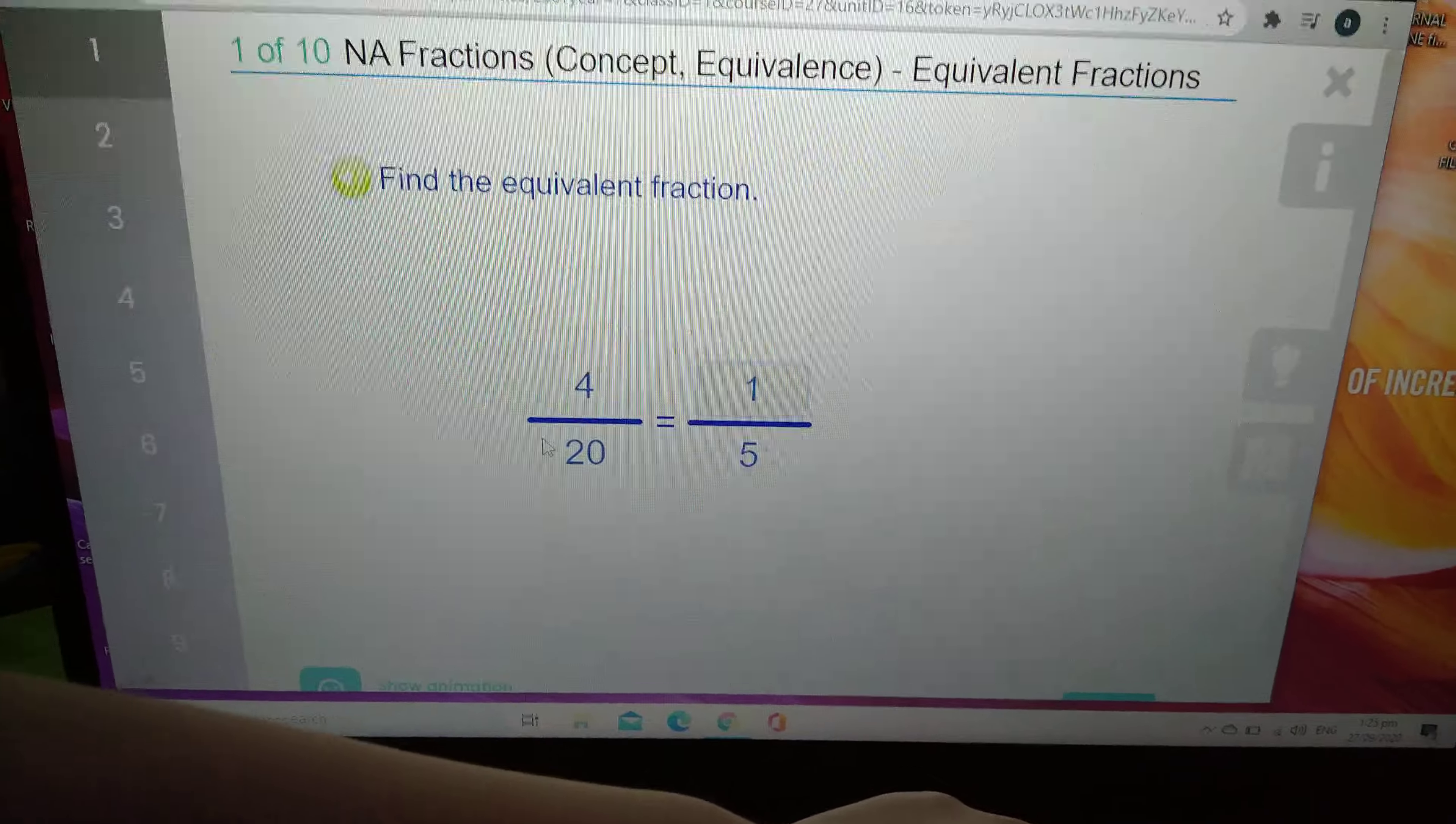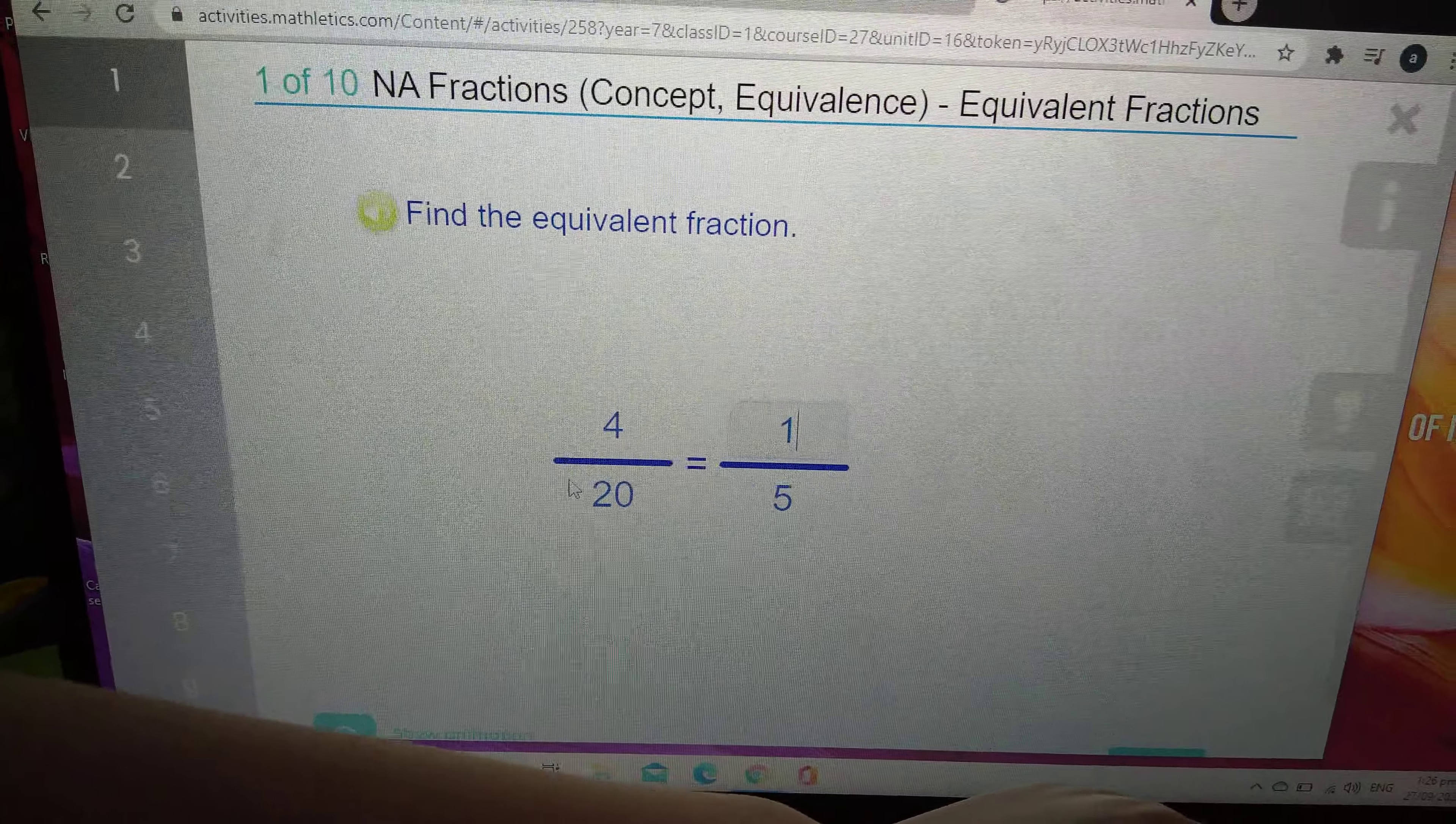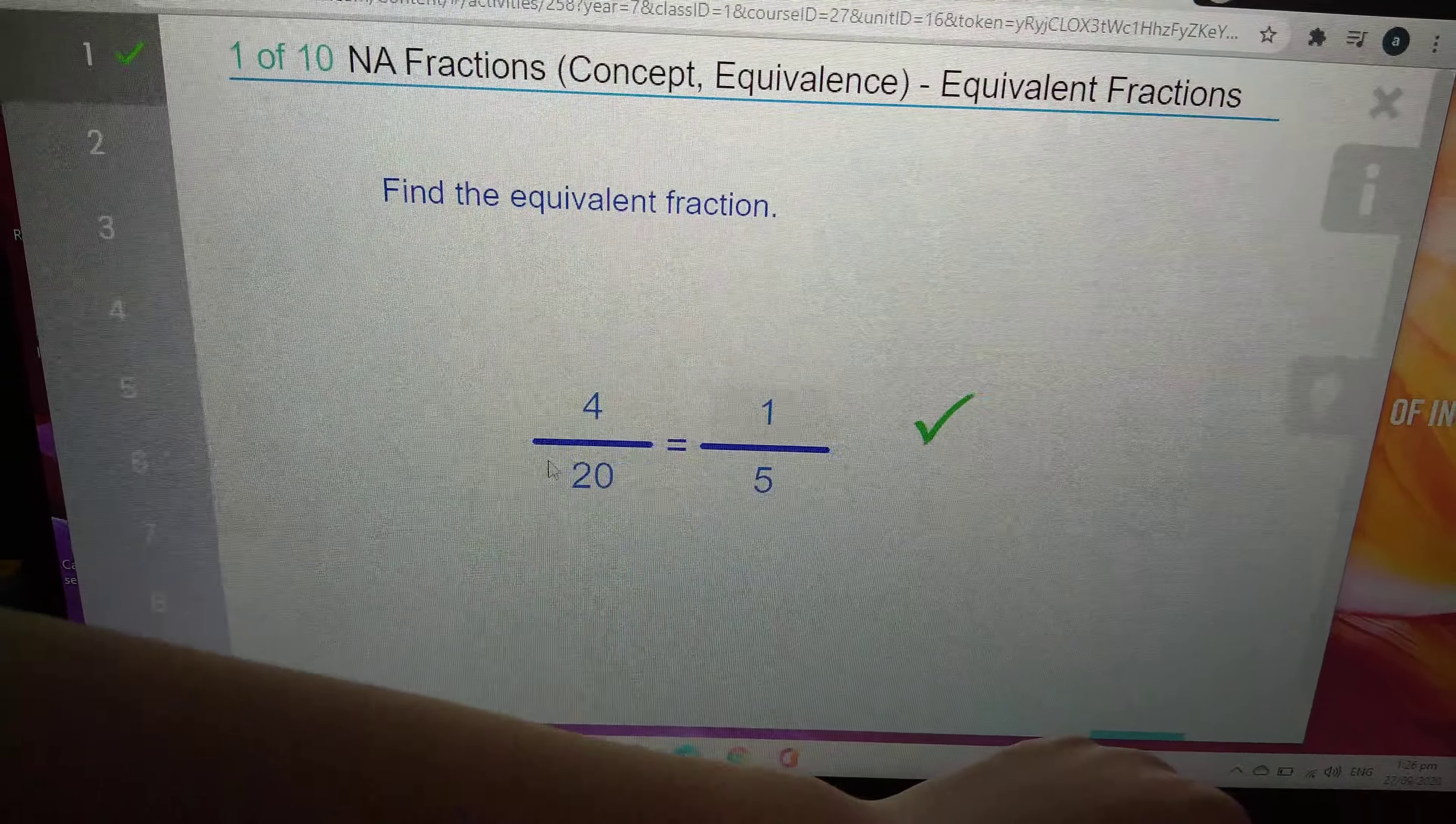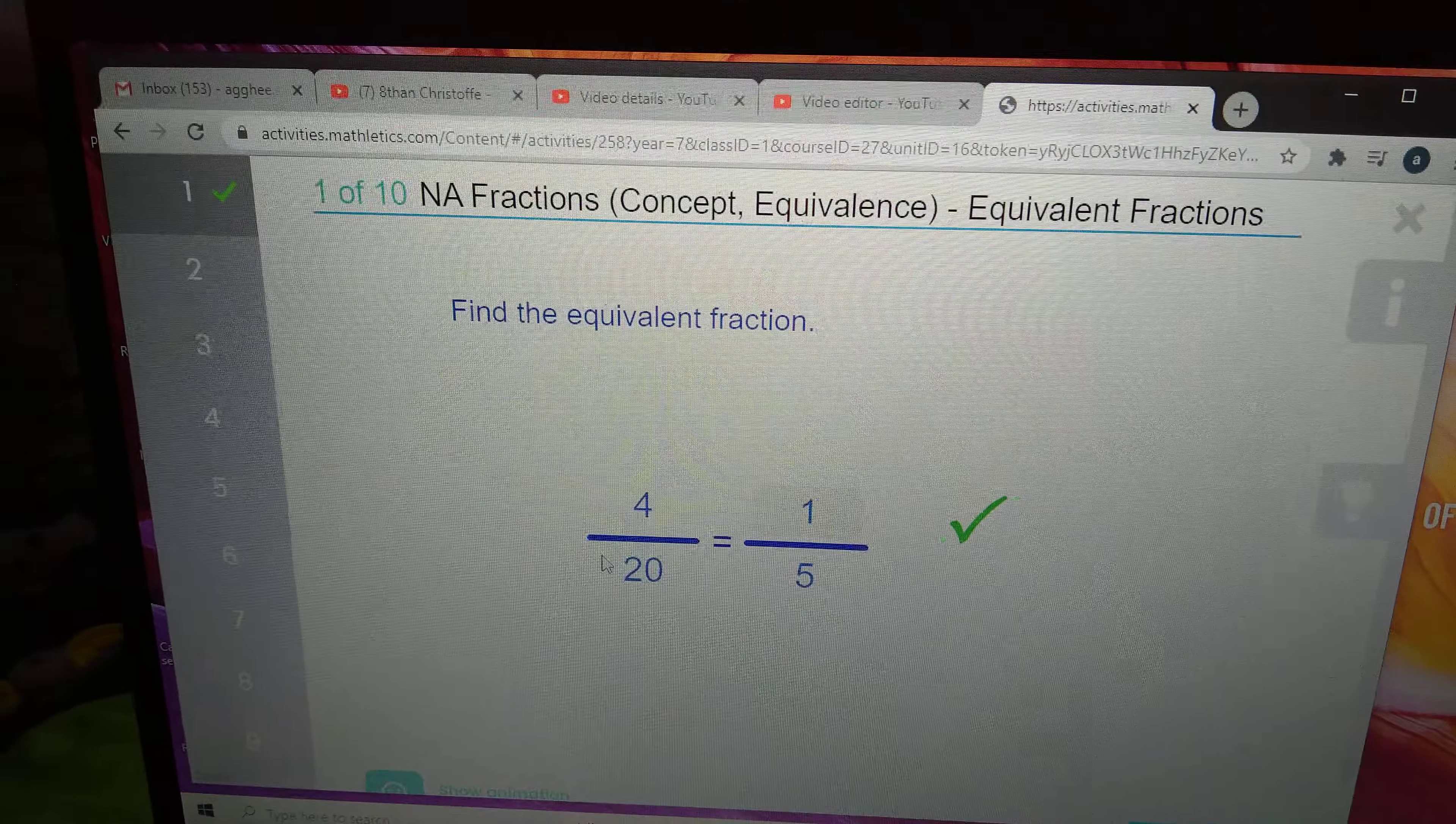Okay, today I'm doing the math classics. Okay, 4 over 20 equals 1 over 5. Yeah. Woo!